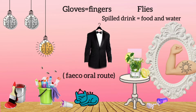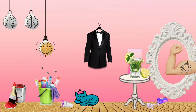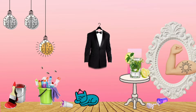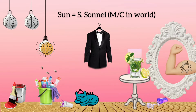In front of the mirror, the man is flexing his arm. The flexed arm represents Shigella flexneri, the most common cause of bacillary dysentery in India. On the arm you can see a tattoo of a sun, which represents Shigella sonnei, the most common cause of bacillary dysentery in the world.